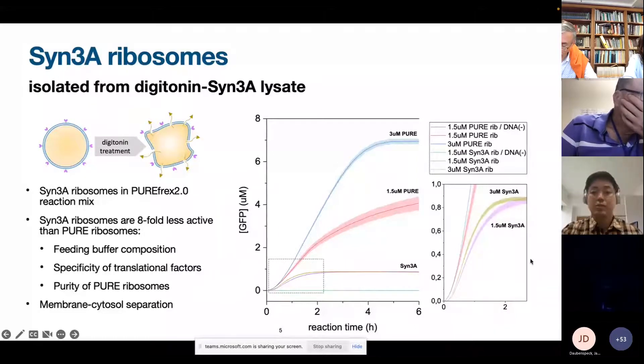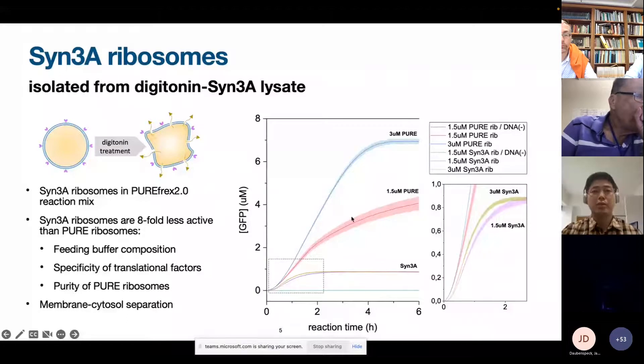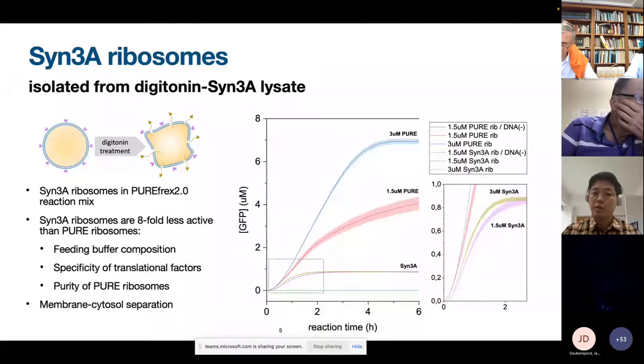So with this experiment, we saw that there are ribosomes active in the lysates that we prepared before. And that the digitonin cell lysis helped to maintain probably the activity of these ribosomes. So mainly, probably the main problem of making functional lysates of mycoplasma is how we can separate the membrane fractions from the cytosolic fraction in a way that there is no contamination of the cytosolic fraction caused by these RNases from the membrane.